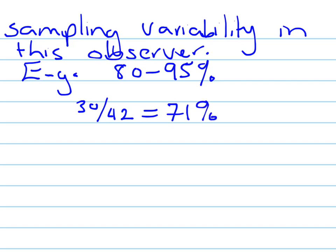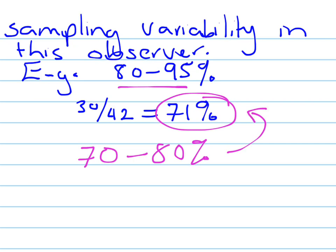If that particular observer normally has a rate between 80 and 95%, then 71% on this particular day is unusually low. Whereas if the observer's normal rate was between 70 and 80%, then 71% would be an expected level of accuracy.